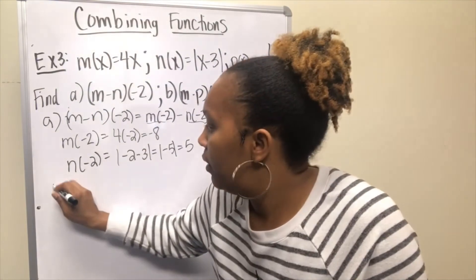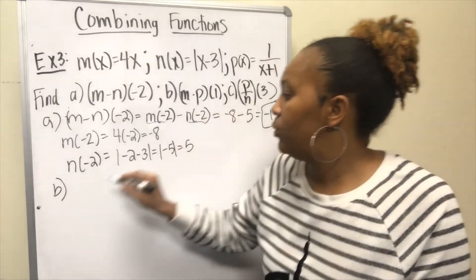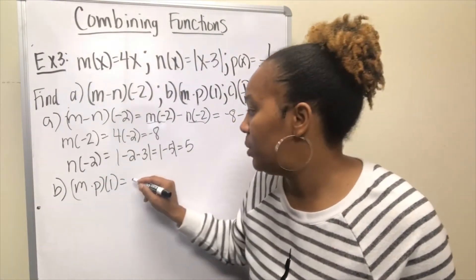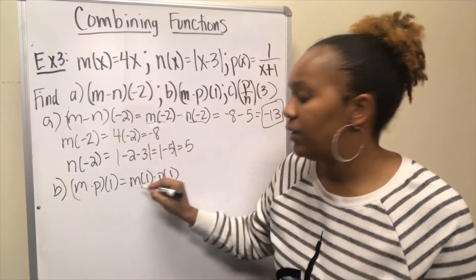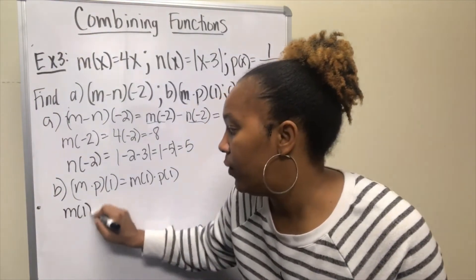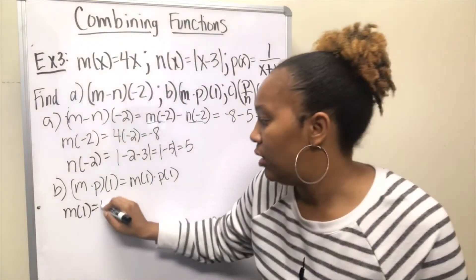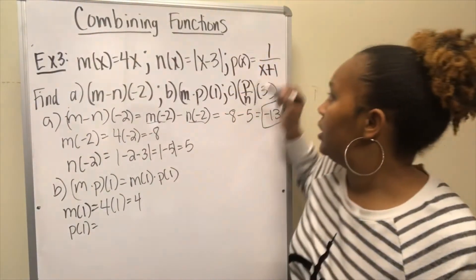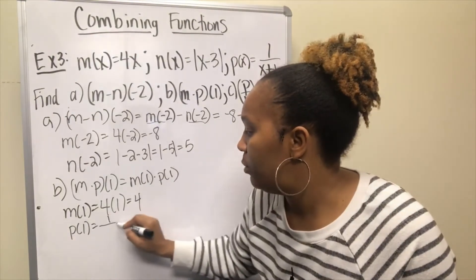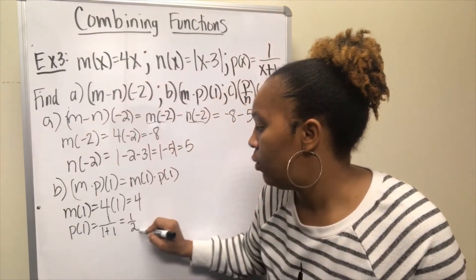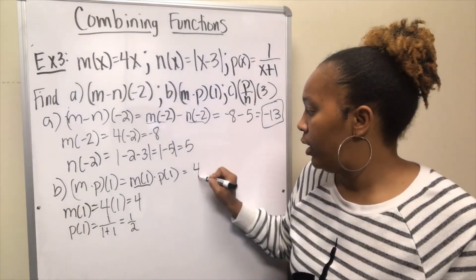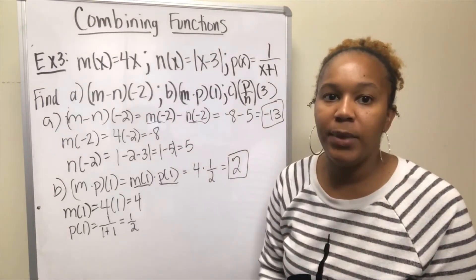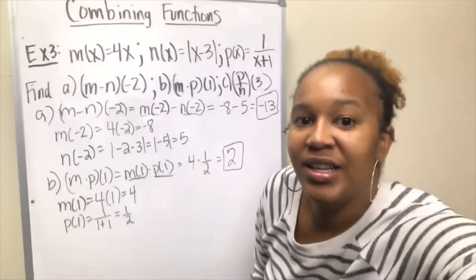For part b, (m·p)(1) = m(1) · p(1). m(1) means replace x with 1 in the m function: 4 × 1 = 4. p(1) means replace x with 1 in the p function: 1/(1+1) = 1/2. So m(1) · p(1) = 4 × 1/2 = 2. The final answer for part b is 2.